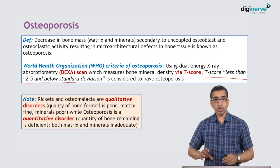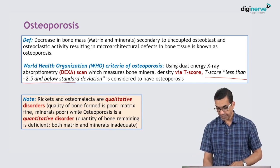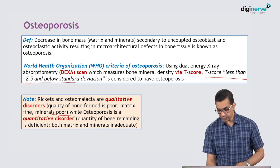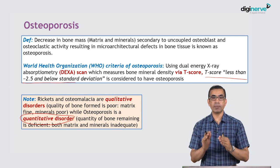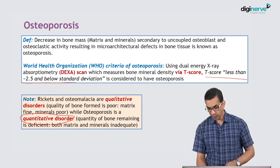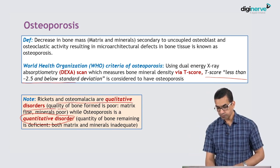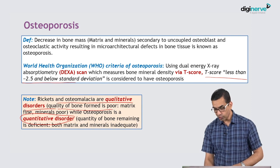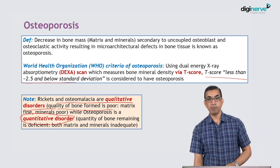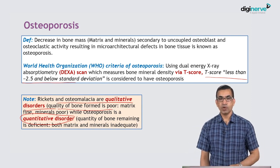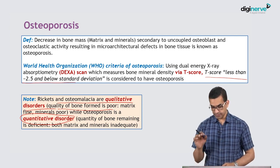Remember, osteoporosis is a quantitative disorder — the whole quantity of bone is less. Whereas osteomalacia and rickets are qualitative disorders where the quality of bone formed is poor: matrix is fine but minerals are less. In osteoporosis, both minerals and matrix are less.